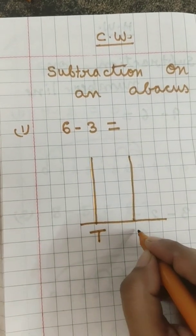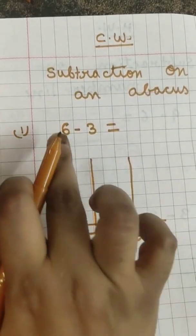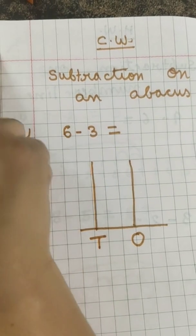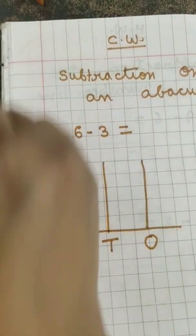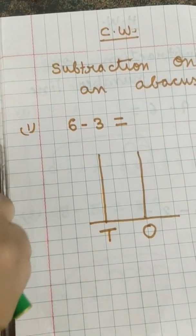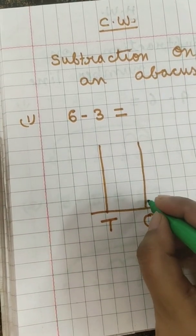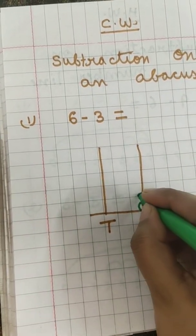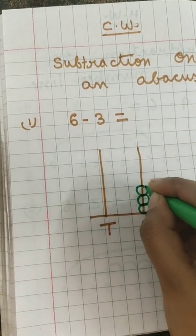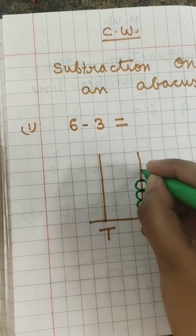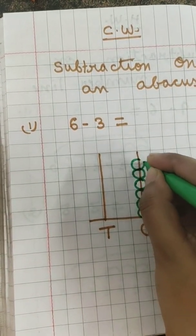We will write T for tens and O for ones. Six is a one digit number, so we will make balls on ones only. One, two, three, four, five and six.